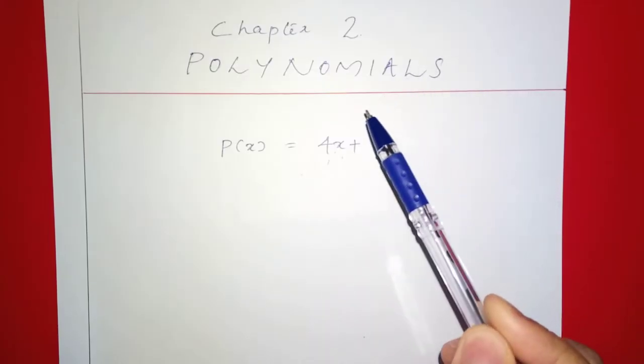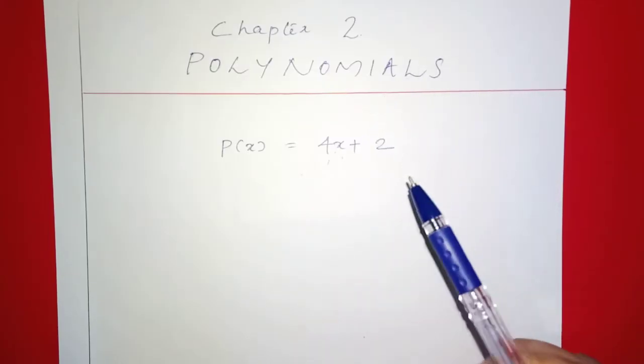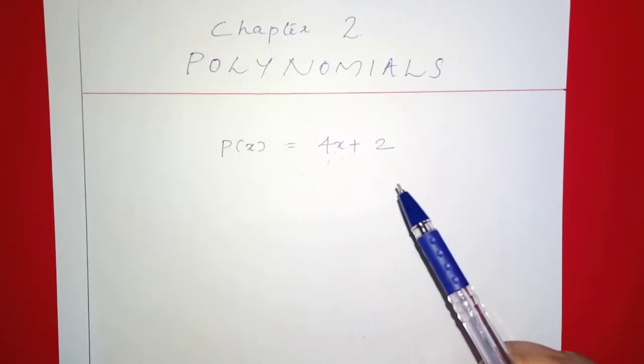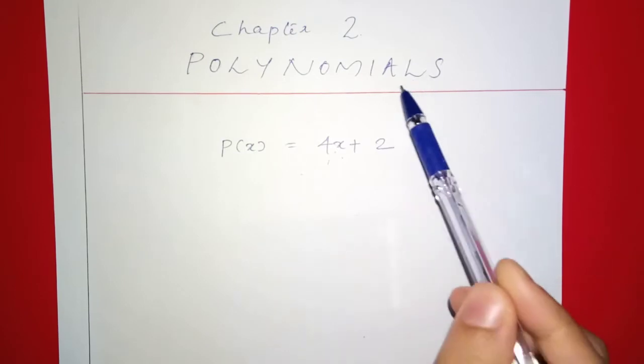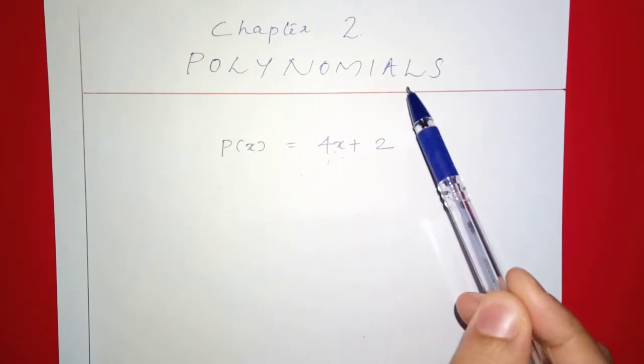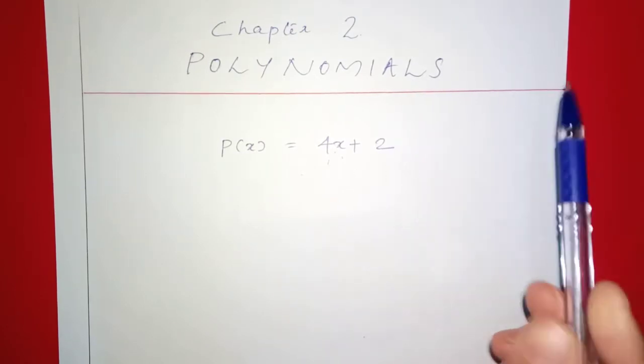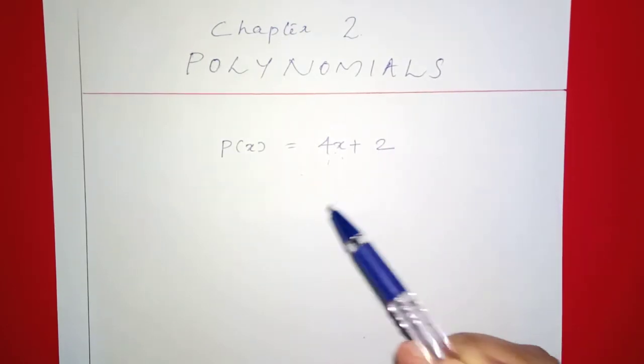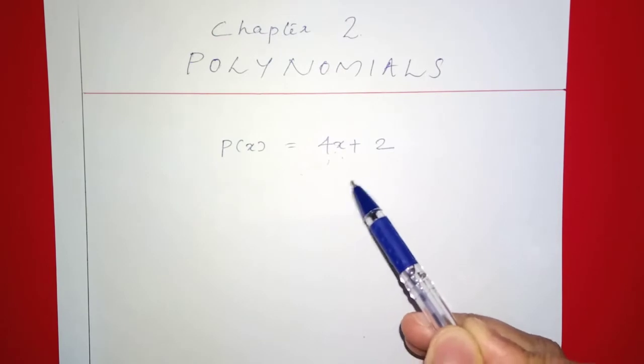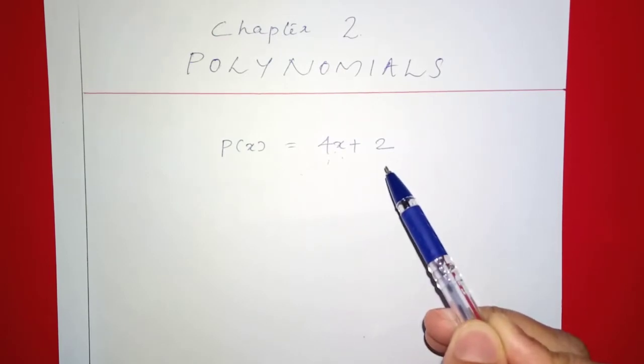Next chapter is starting. Chapter 2: Polynomials. Polynomials are what you are going to study in 9th grade. We have an example: P of x is equal to 4x plus 2.